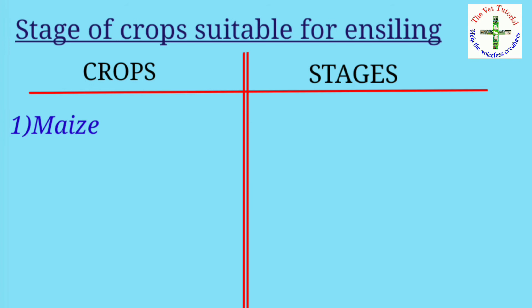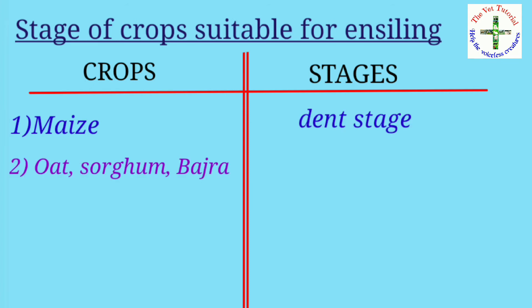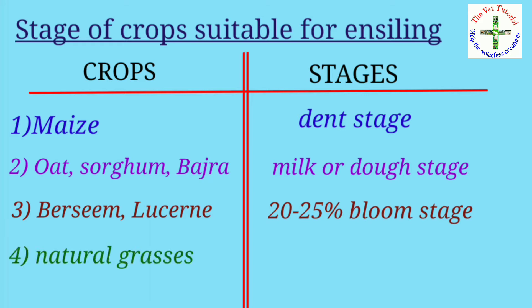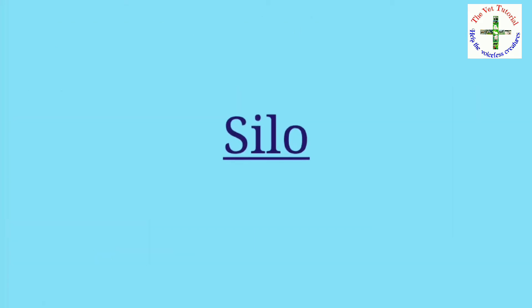The stage of crop suitable for ensiling: maize at the dent stage; oat, sorghum, and bajra at the milk or dough stage; berseem and leucaena at 20 to 25 percent bloom stage; and natural grasses at the early flowering stage.